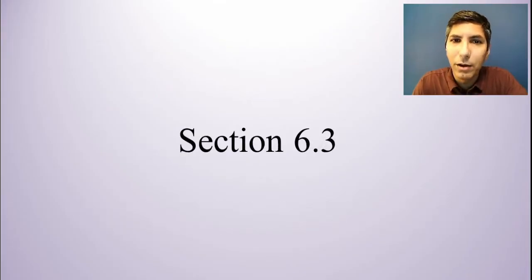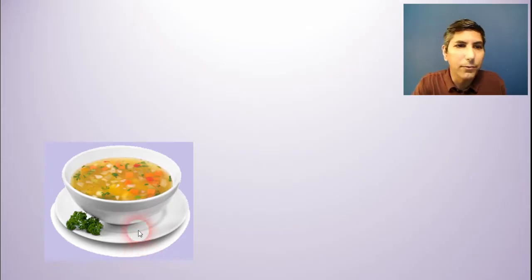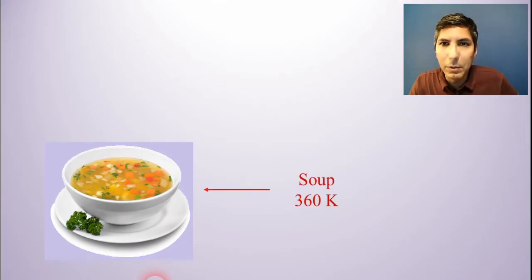Now let's move right on to section 6.3 and this section discusses how substances change temperature. Let's imagine that we have a nice hot bowl of chicken noodle soup or whatever your favorite soup might be. And if you were to take the temperature of that hot soup you'd find it probably would have a temperature of about 360 kelvin. So that's a fairly hot bowl of soup.